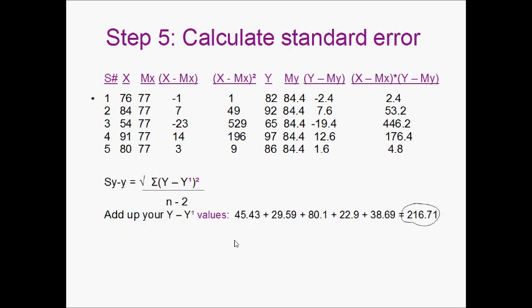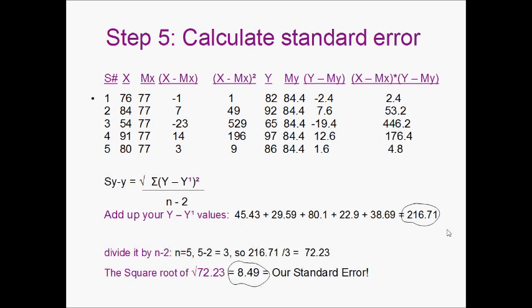Now we need to take the sum of each of these. So we're going to add them all up, and we're going to get a final answer for the top of 216.71. Divide this by n divided by 2. So our n is 5 in this case, how many total number of participants we have. 5 minus 2 is 3. So 216.71 divided by 3 is 72.23. Then we've got to take the square root of this number. So the square root of 72.23 is 8.49, and this is our standard error.